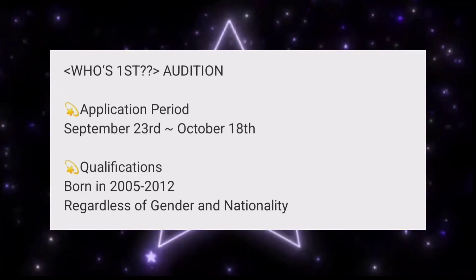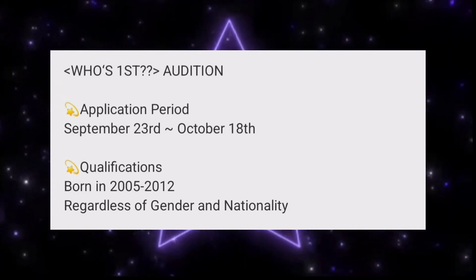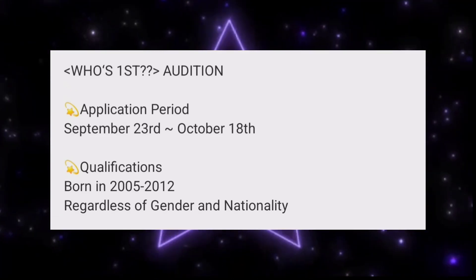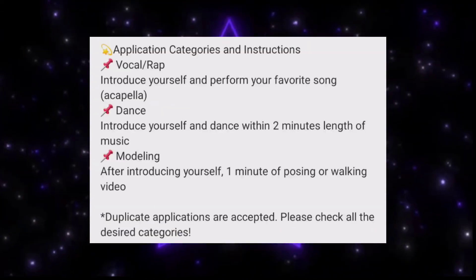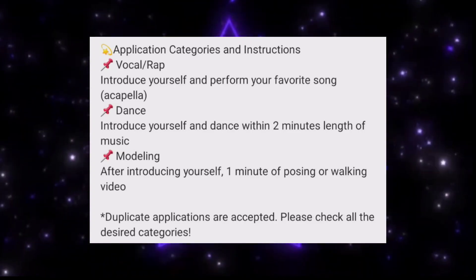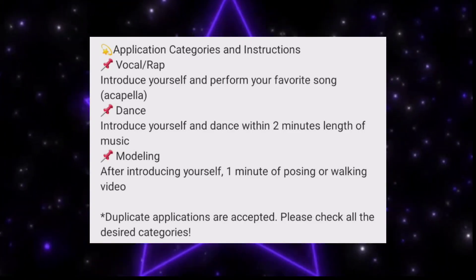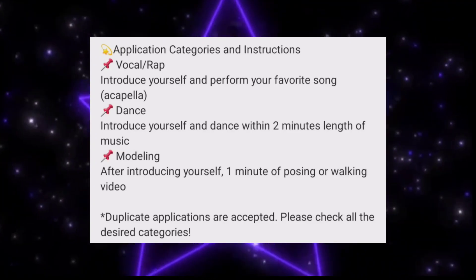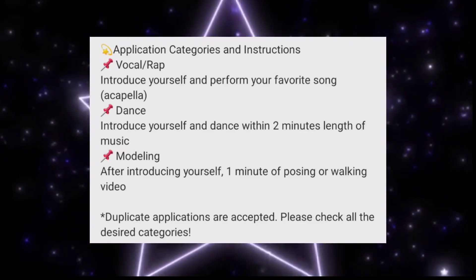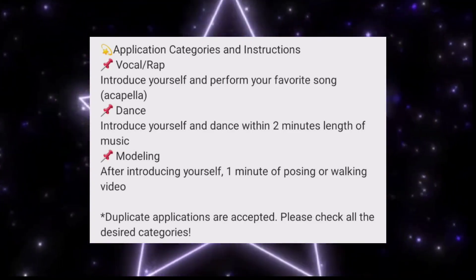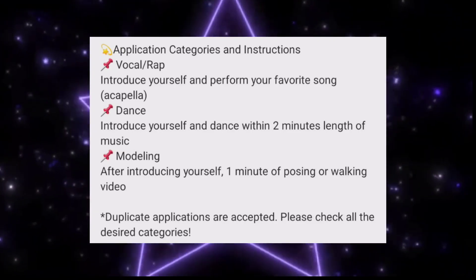Applicants must be born between 2005 and 2012, regardless of gender or nationality. For vocal, you need to introduce yourself and perform your favorite song a cappella without background music. For dance, a two-minute introduction video is required. For modeling, introduce yourself in a one-minute posing or walking video. You can apply for two categories as well — vocal, rap, dance, and modeling categories are available.